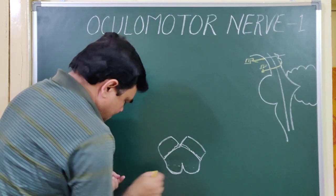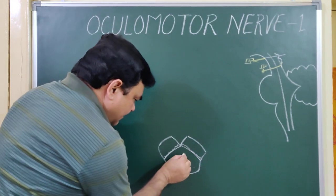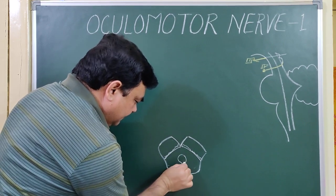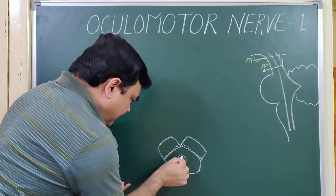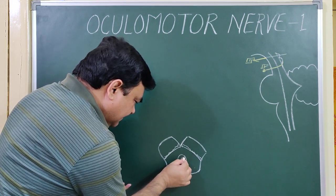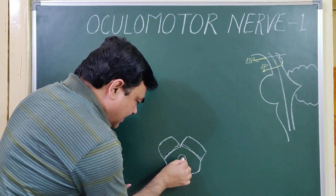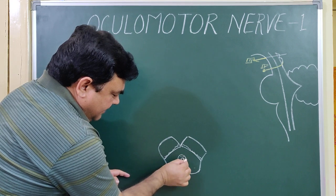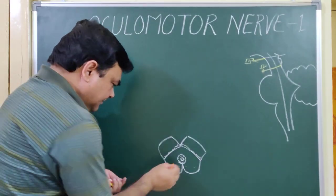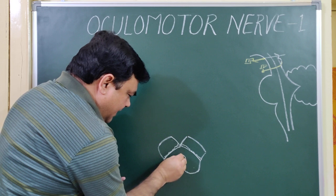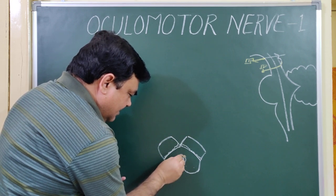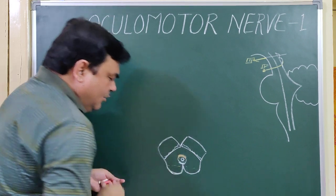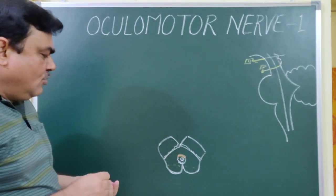Here is the position of the periaqueductal gray matter. This is the cerebral aqueduct, and this is the periaqueductal gray matter where the oculomotor nerve nuclei are present. This is the oculomotor nerve nuclei.